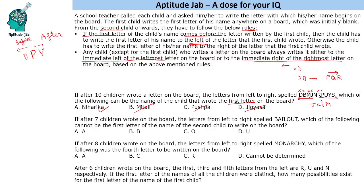The next question: after seven children wrote on the board, the letters from left to right spelled 'bailout.' Which of the following cannot be the first letter of the name of the second child? Multiple first letters are possible here. Starting with B as the first letter: A cannot be written to its right side, so B is not possible. If A is the first letter, B cannot be written on its left side, so A is also not possible.